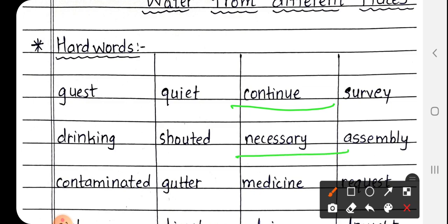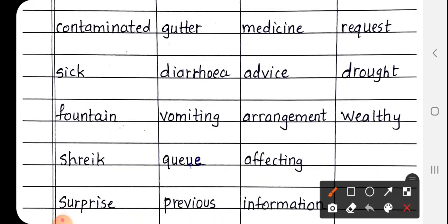Necessary. Necessary, N-E-C-E-S-S-A-R-Y. Necessary matlab zaruri. Jo cheez zaruri hoti hai, usse kehte hai necessary. Next is medicine, M-E-D-I-C-I-N-E. Medicine matlab dawa. Next is advice, A-D-V-I-C-E. Advice matlab salah.